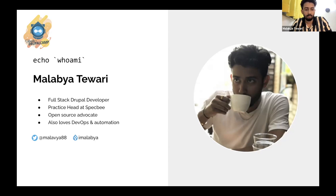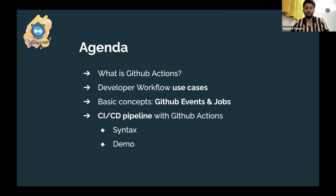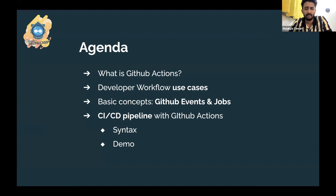The agenda for today: I'm going to briefly discuss what GitHub Actions are, what the developer workflows or use cases are where GitHub Actions fits in, what the basic concepts are — GitHub events, jobs, workflows, and actions — and how you can use them to build a CI/CD pipeline. We'll cover the syntax, and lastly we'll have a brief demo of how you can use GitHub Actions when an event is triggered.